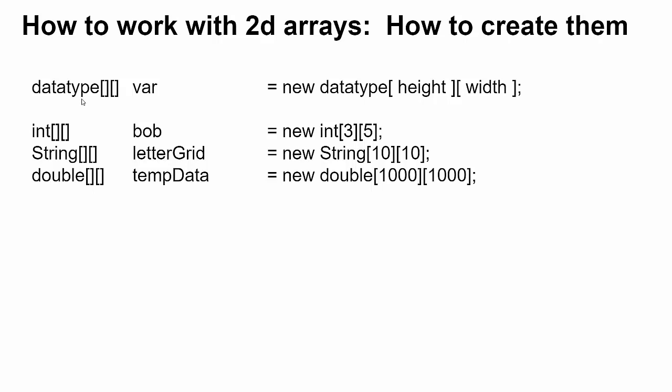You start with a data type and then bracket bracket, and the data type tells you what type of variables you're organizing into a grid. This would be integers in a grid, this would be strings in a grid, this would be doubles in a grid.